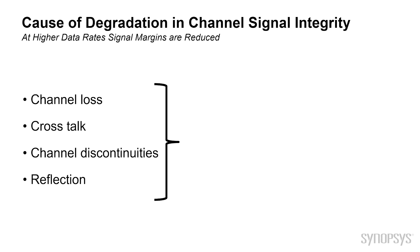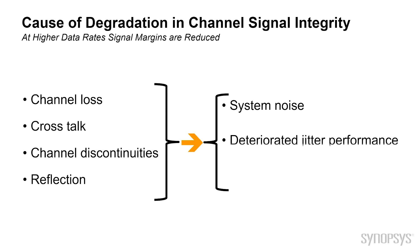There are channel loss increases, crosstalk increases, channel discontinuity, and reflections are affected. As a result, what happens is the eye signal closure gets smaller and smaller over time.